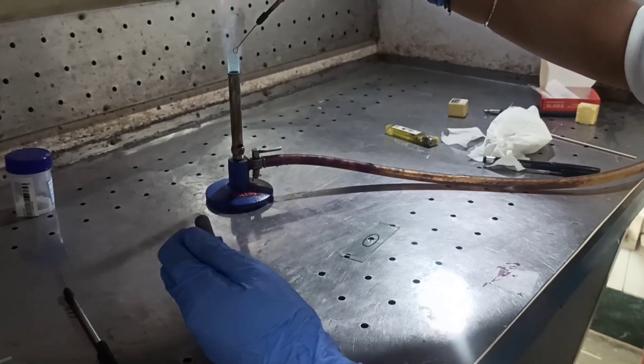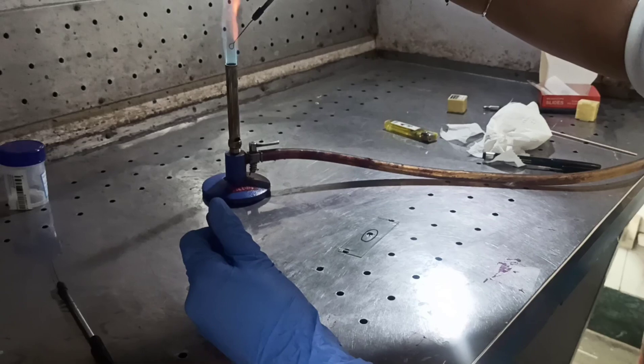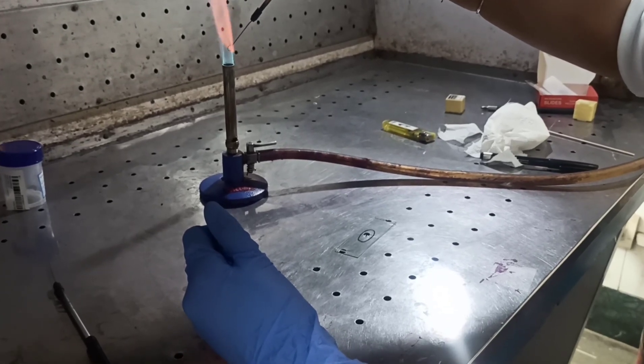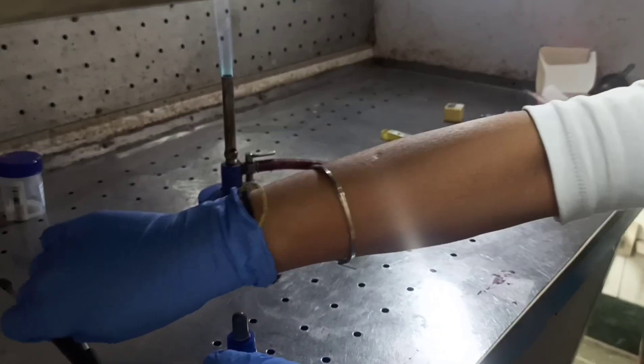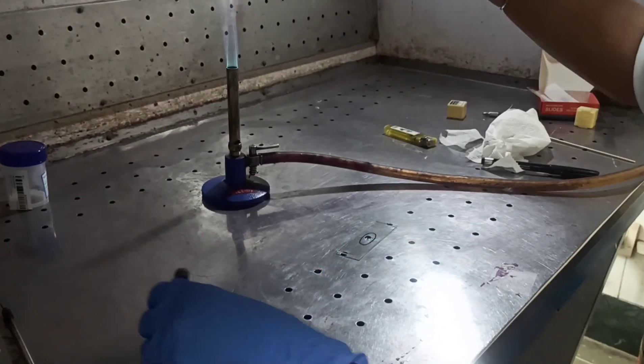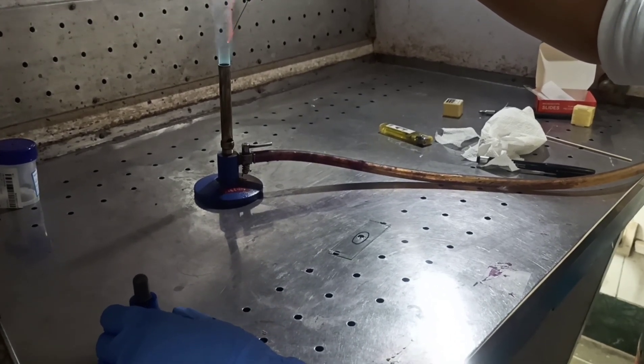Take a drop of normal saline on a glass slide with the help of wire loop. With a straight wire or loop, touch the bacterial colony.